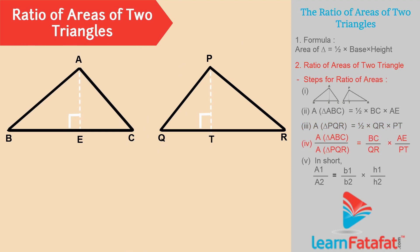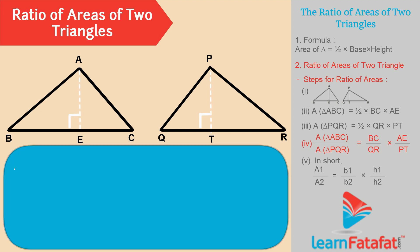Now, we will take ratio of areas of these two triangles. That is area of triangle ABC divided by area of triangle PQR is equal to half into BC into AE divided by half into QR into PT.